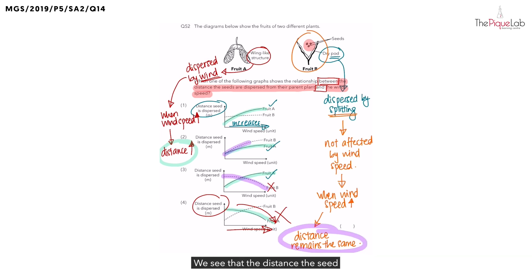How about number 2? We see that the distance the seed is dispersed is increasing. Is this correct? No. Wrong as well. How about number 1? We see the distance the seed is dispersed remaining the same. So option 1 is correct. And that's our answer for this question.